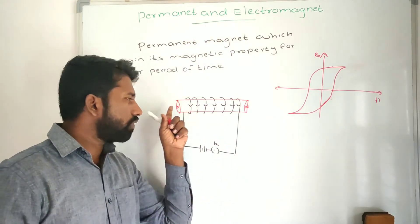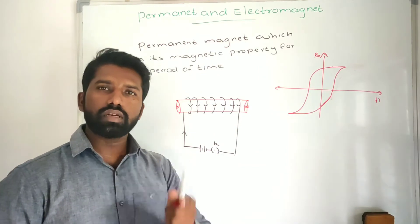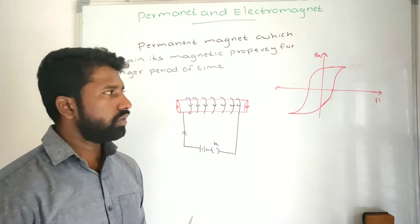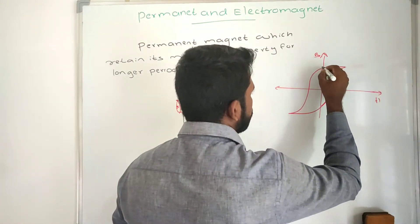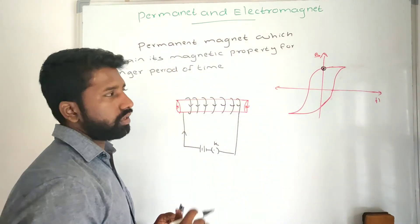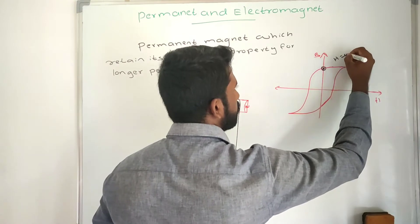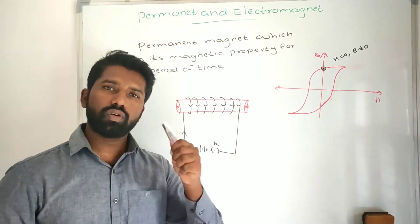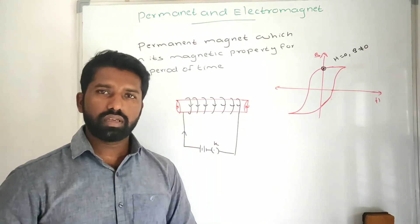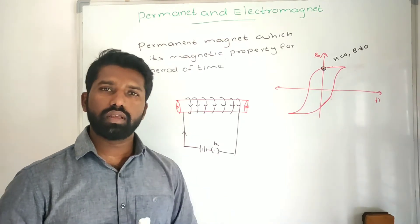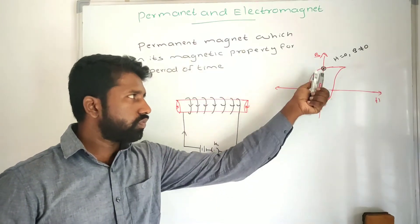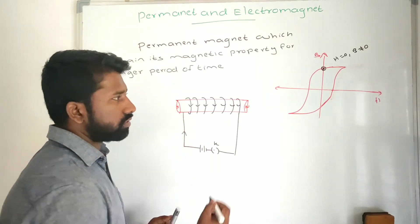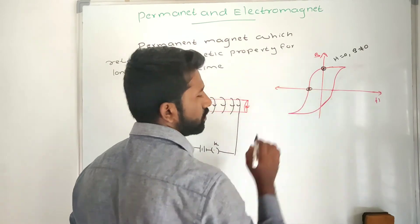If you look at the hysteresis loop, also called the B-H curve, B is the magnetic field inside the ferromagnetic material and H is the magnetic intensity related to the external magnetic field, which is produced by the solenoid. The retentivity point is where H equals zero but B is not equal to zero — meaning the external magnetic field is zero but the magnetic field inside the material is not zero. Retentivity indicates how much magnetic field a material can hold in the absence of an external magnetic field, and this value should be high for a permanent magnet.